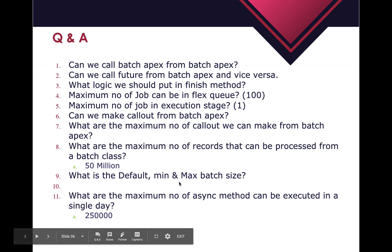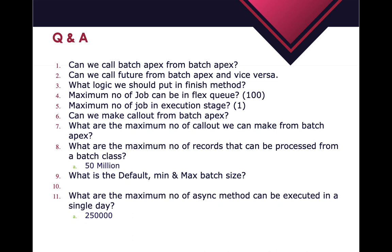What is the maximum number of async methods that can be executed in a single day? When we say async methods, this includes future methods, queueable, and Batch Apex. The limit is 250,000. If you exceed this maximum number, you will not be able to execute any async method that day until the 24-hour limit resets.